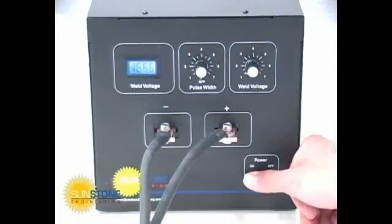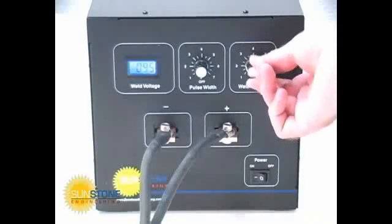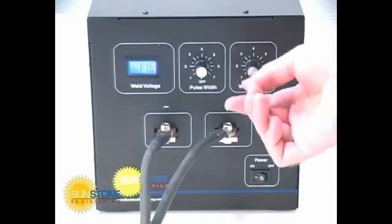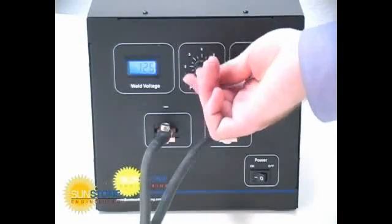Weld energy is adjusted using the weld voltage dial. The pulse width knob determines how much energy is released with each weld.